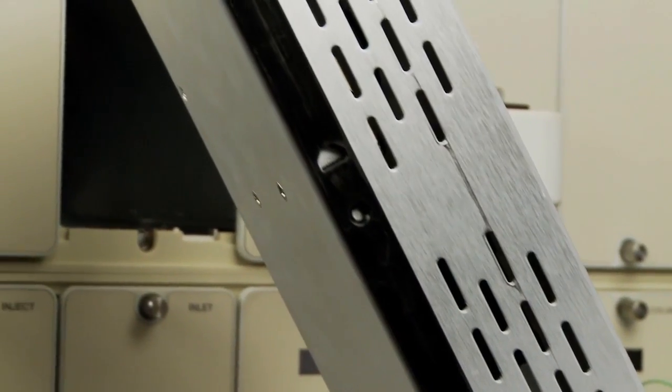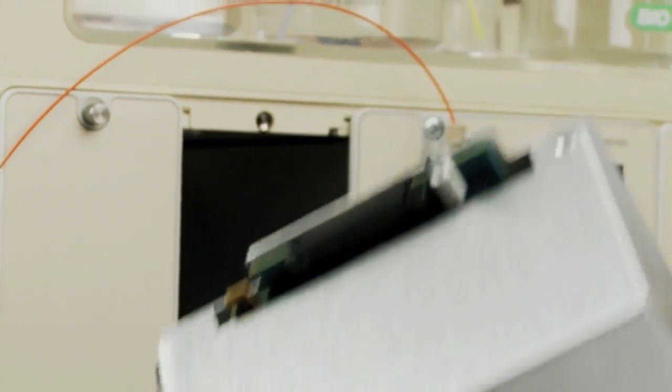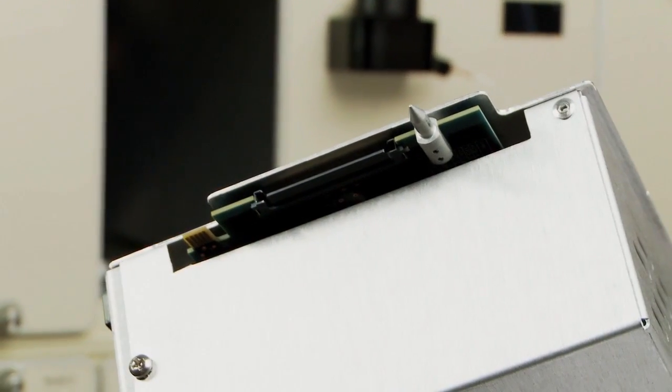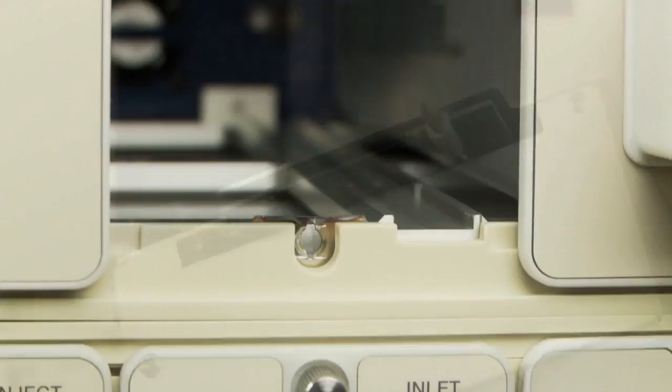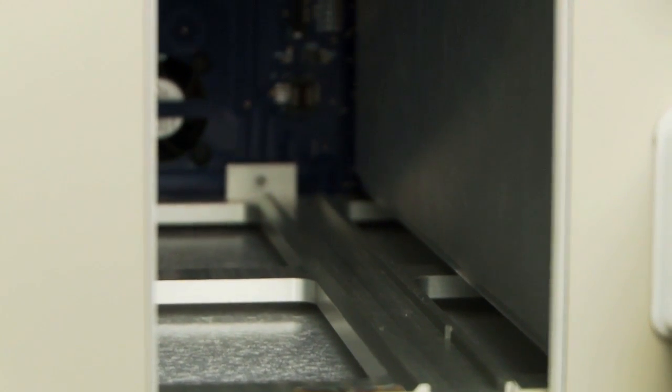Unpack the new module. Align the module with the open bay. Each module can be installed in only one orientation. Ensure the rail on the right underside of the module aligns with the track on the right side of the empty bay.